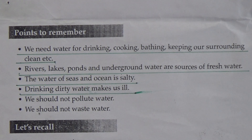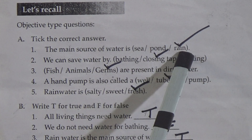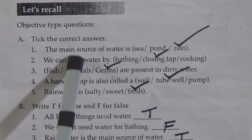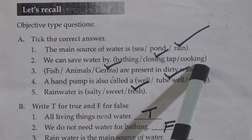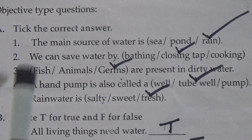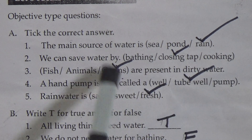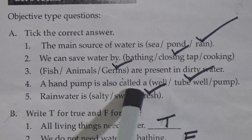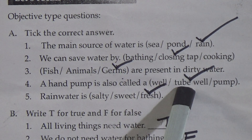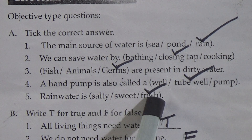Objective type questions — Topic A, choose the correct answer. Number 1: the main source of water is (sea / pond / rain) — answer is rain. Number 2: we can save water by (bathing / closing taps / cooking) — answer is closing taps. Number 3: germs are present in (fish / animals / dirty water) — answer is germs. Number 4: a hand pump is also called a (well / tube well / pump) — answer is tube well.